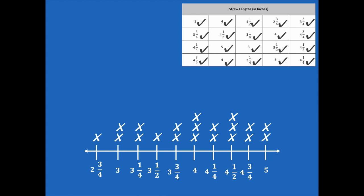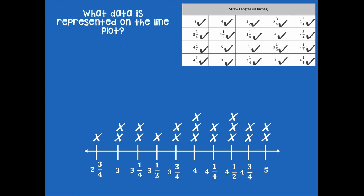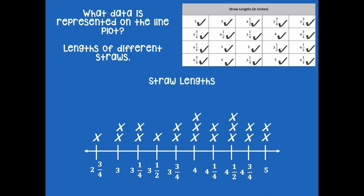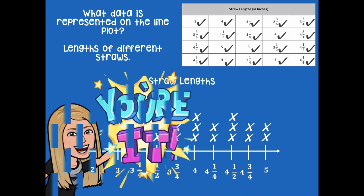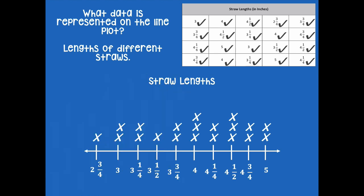Let's answer some questions. We're going to give this number line a title that tells what it shows. What data is represented on our line plot? It's the lengths of the different straws — it tells us at the top of that chart. So we can label that as straw lengths. Pause the video, add the title 'Straw Lengths' to your line plot, and then click play when you're ready for the next step.